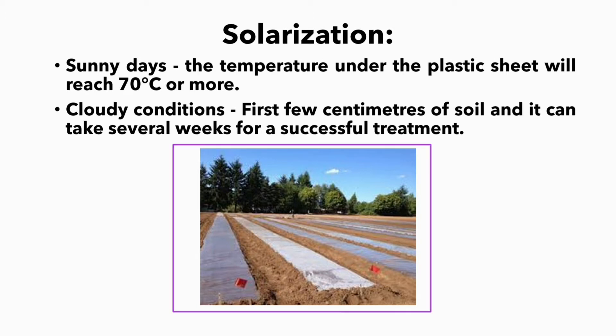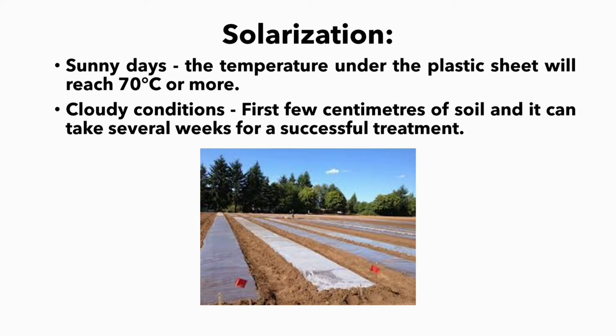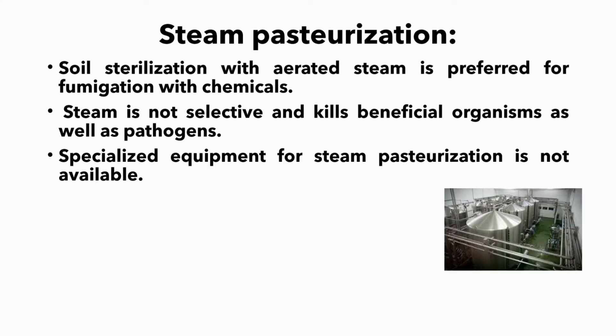On sunny days, the temperature under the plastic sheet will reach 70 degrees Celsius or even more. But during cloudy conditions, it affects only the first few centimeters, and it takes several weeks for the successful treatment. Steam pasteurization — soil sterilization with aerated steam — is preferred for fumigation with chemicals.